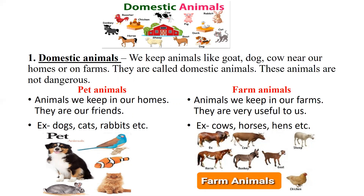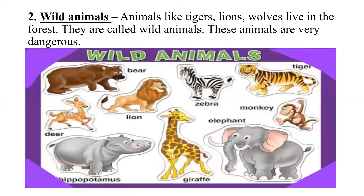Domestic animals are of two types: pet animals and farm animals. Animals like dogs, cats, and rabbits that we keep in our homes are our friends — they are called pet animals. Animals like cow, ox, horse, and hen that we keep on farms are called farm animals. These are very useful to us and help us in many ways.